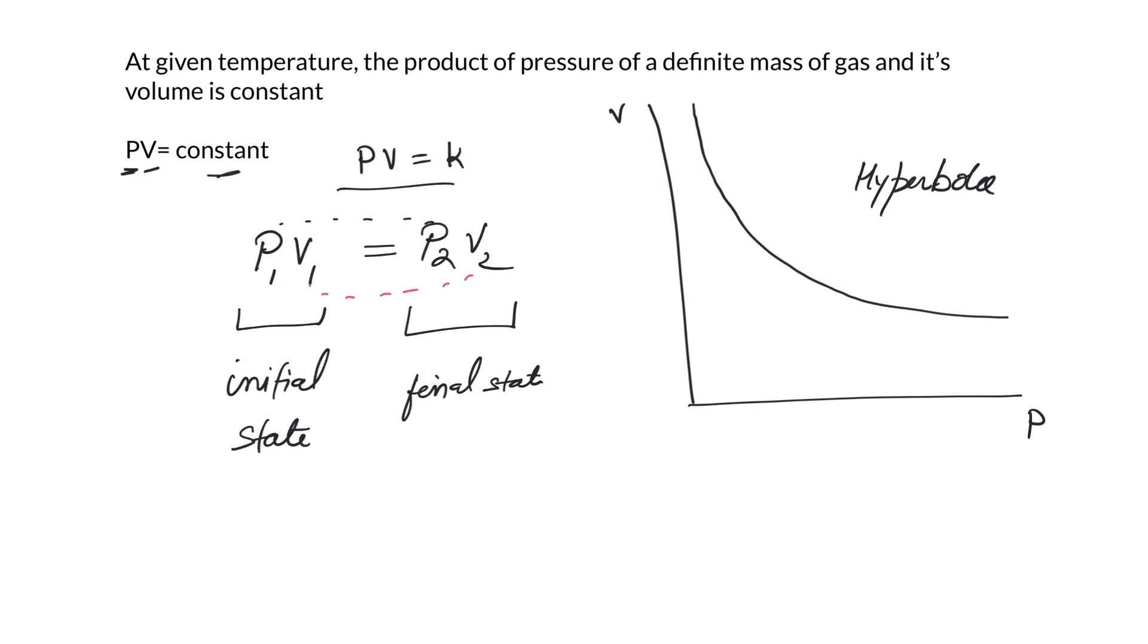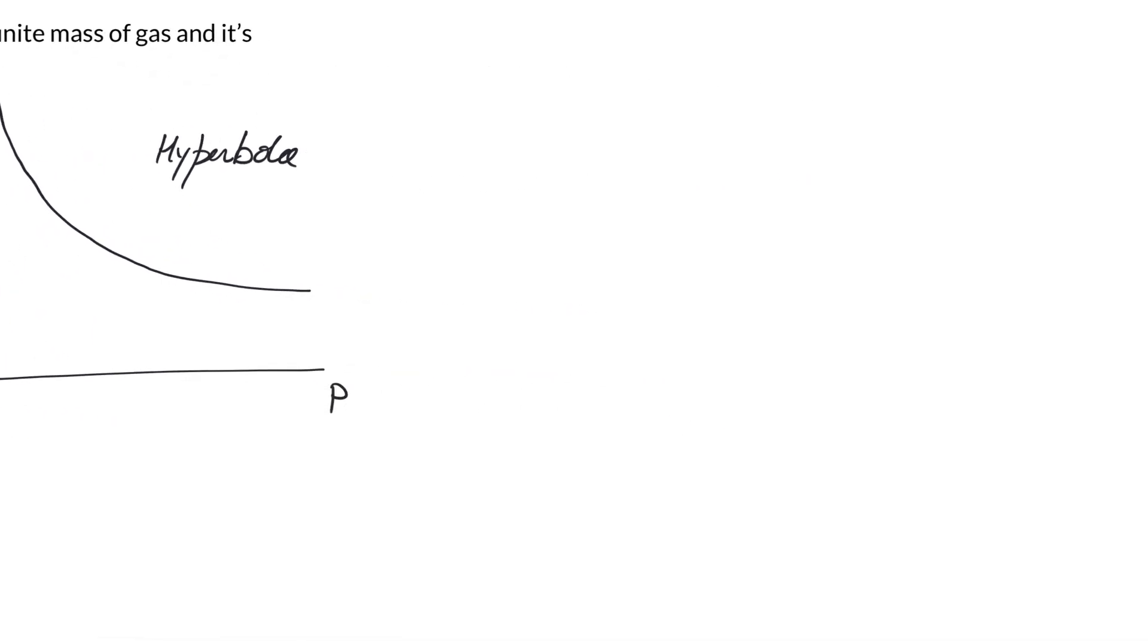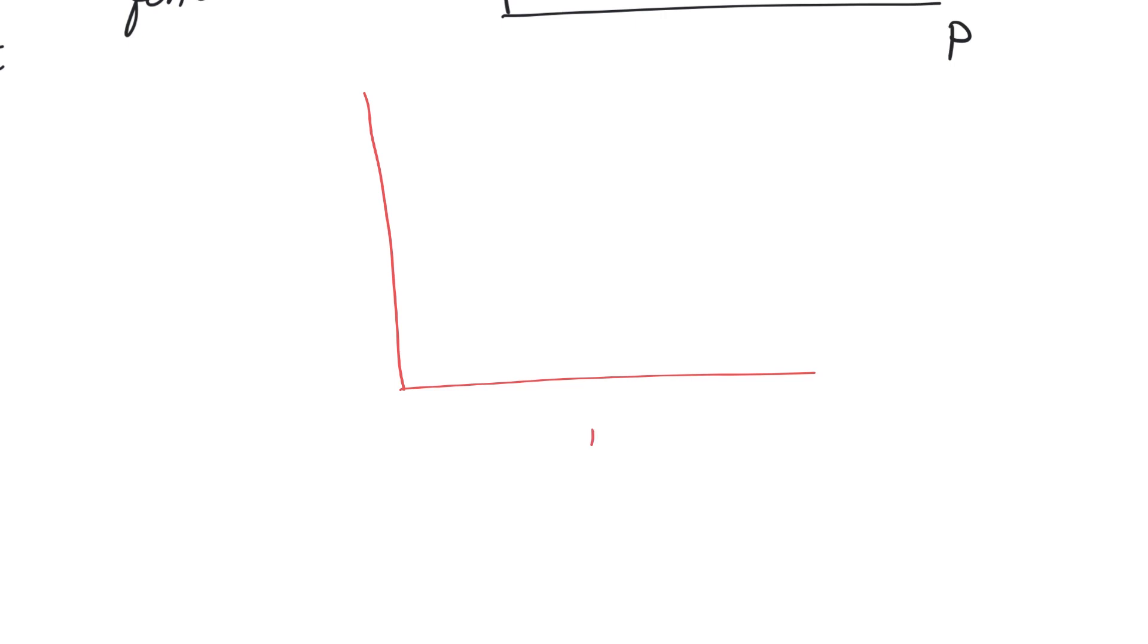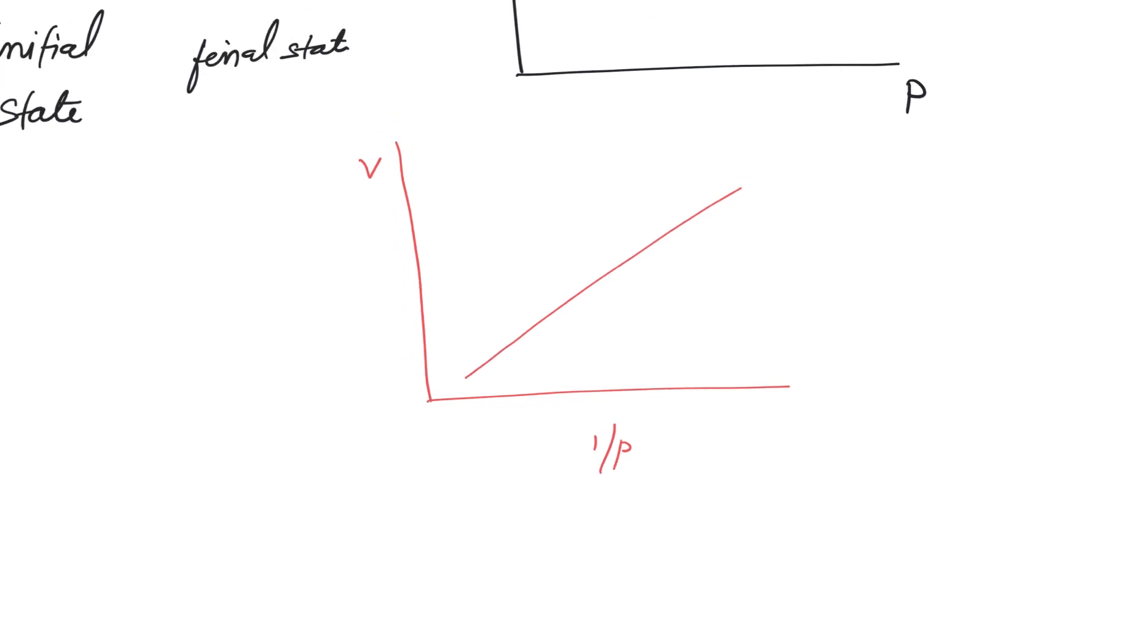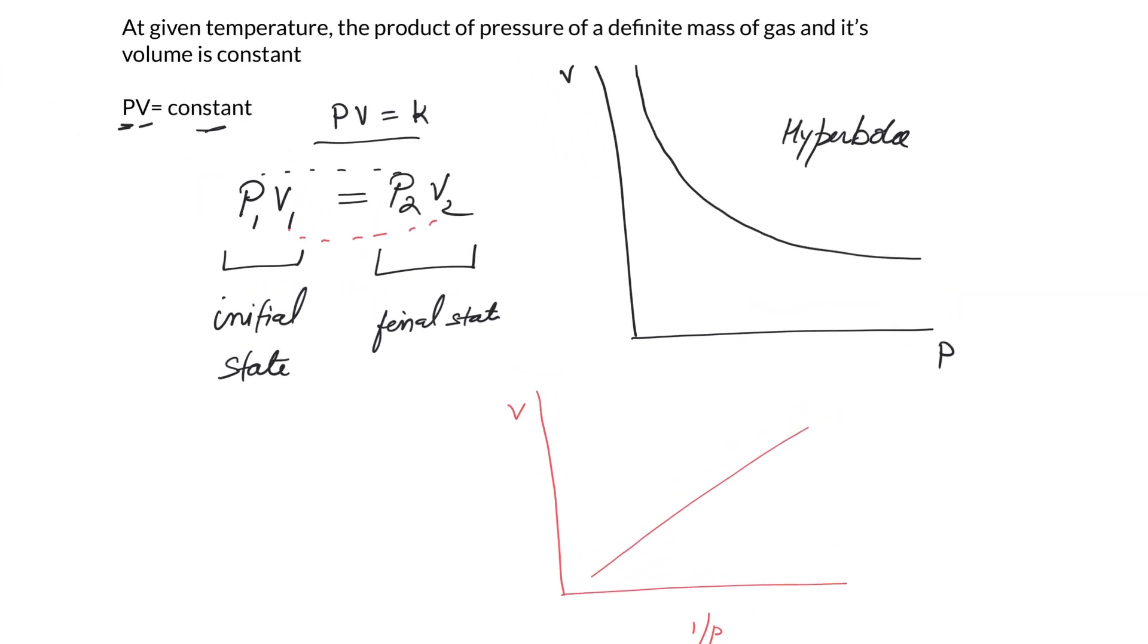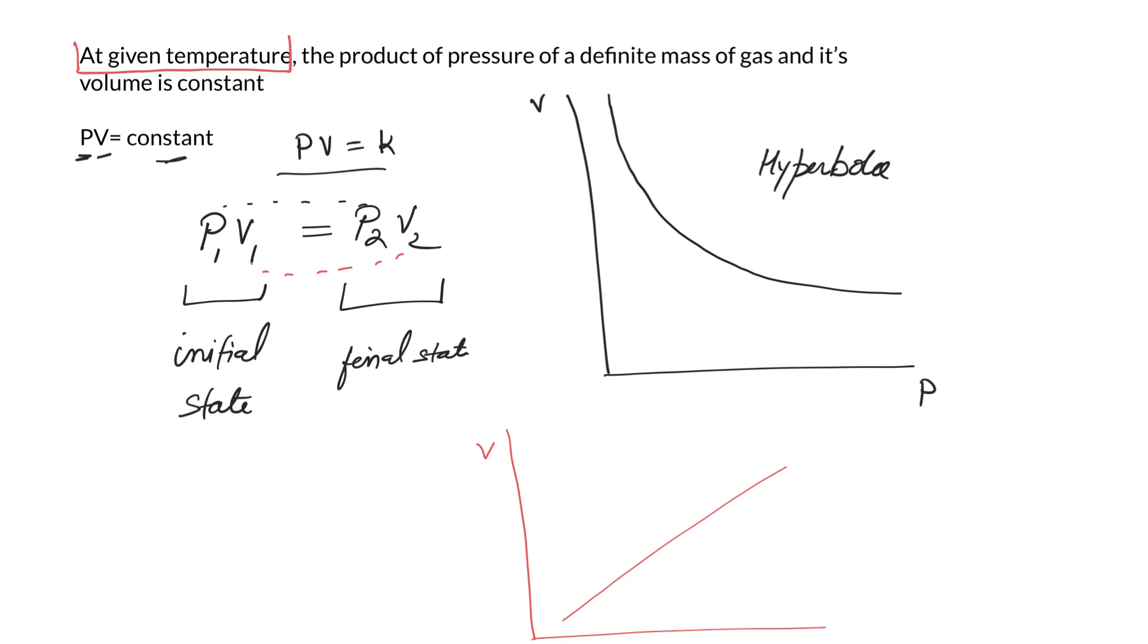There's one more graph that you should be aware of while you talk about Boyle's law, and that's where you draw a relation between one upon P and volume. This comes out to be a straight line. Remember, whenever we are talking about such conversions, we are saying at a given temperature, that means T is constant here.